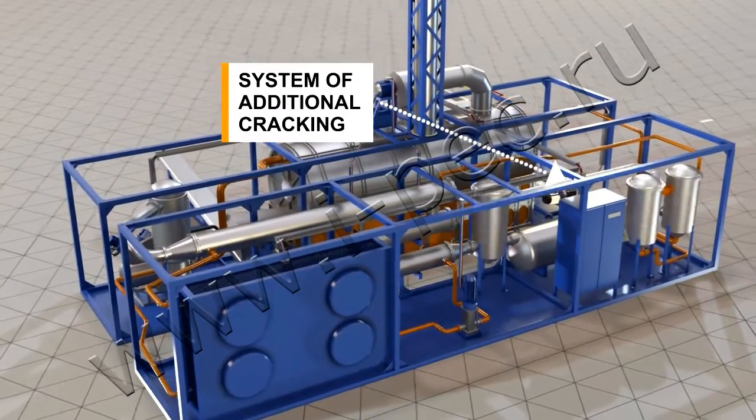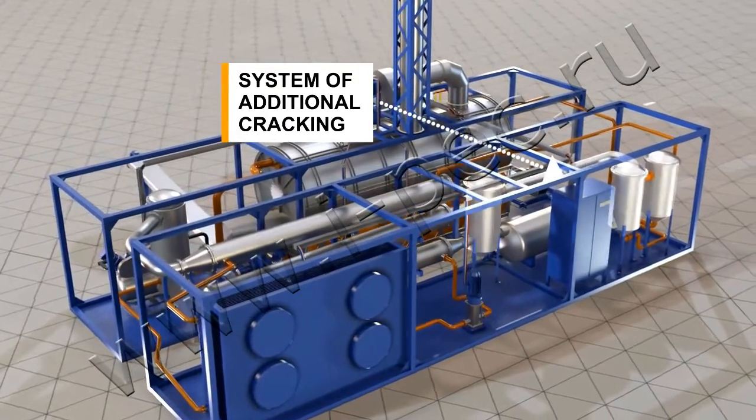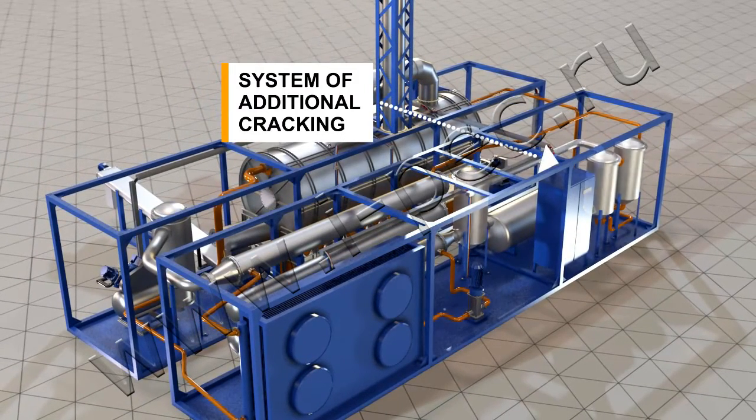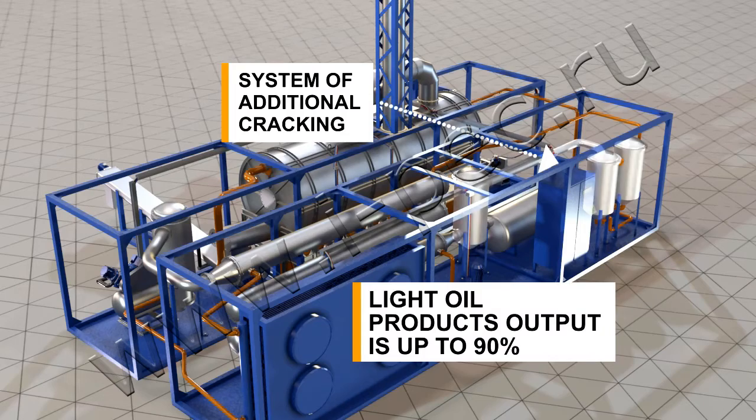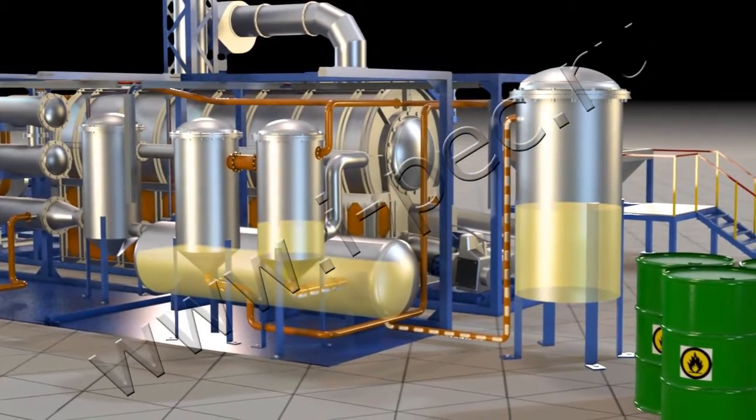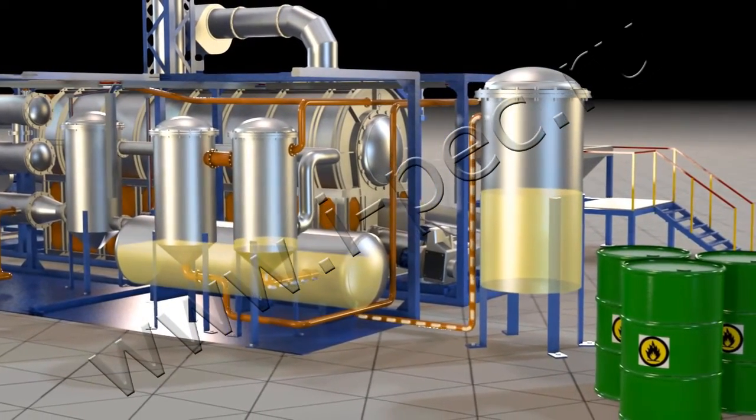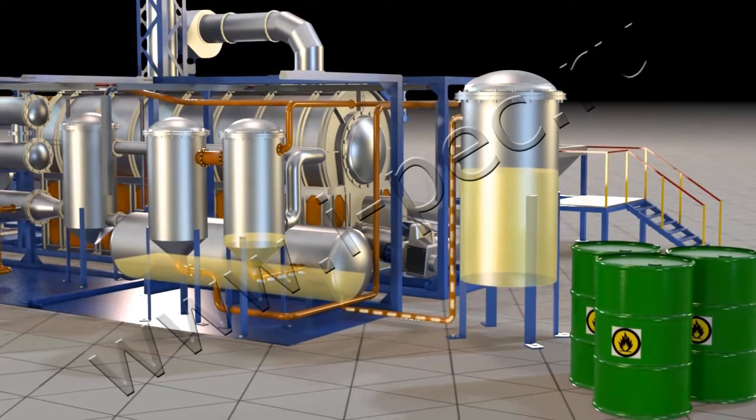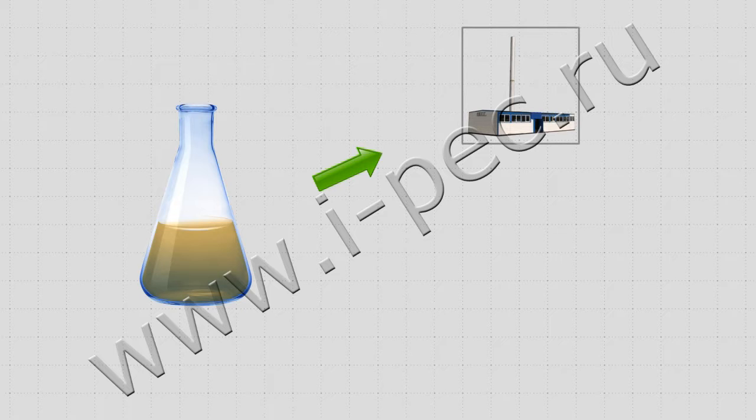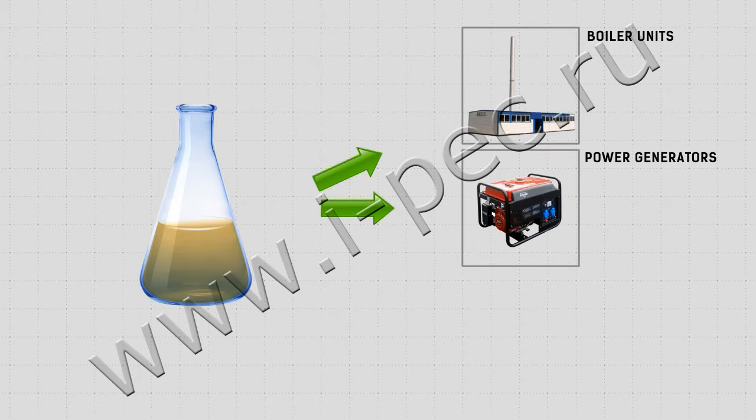The improved pyrolysis process features a number of innovations. For example, an effective system of follow-up cracking provides maximum control over the degree of organic materials decomposition as well as increases the output of light products in the derived fuel up to 90%. Pyrolysis liquid fuel drains through the bottom nozzle of the separator into the tank, where the fuel is pumped to the storage container or finished product warehouse.